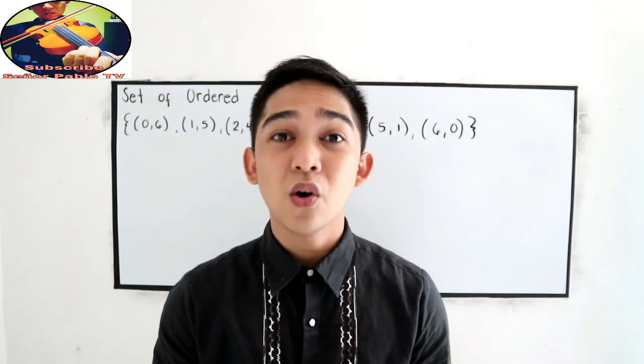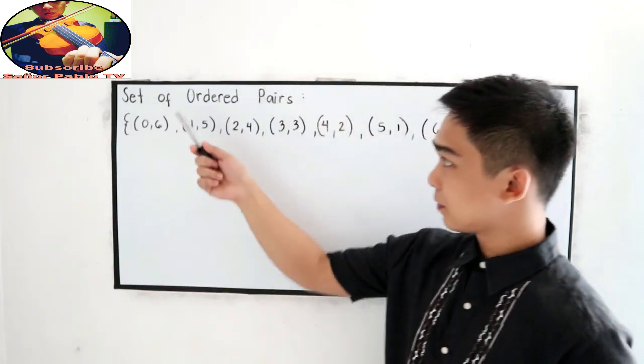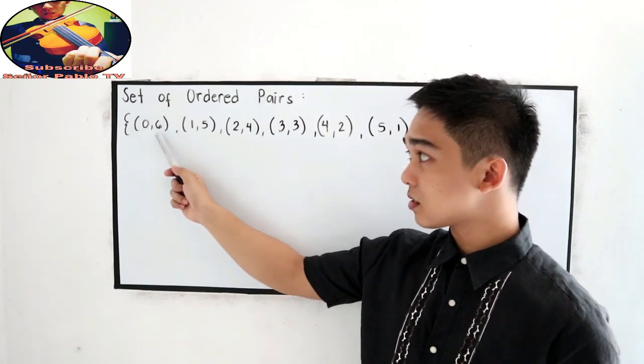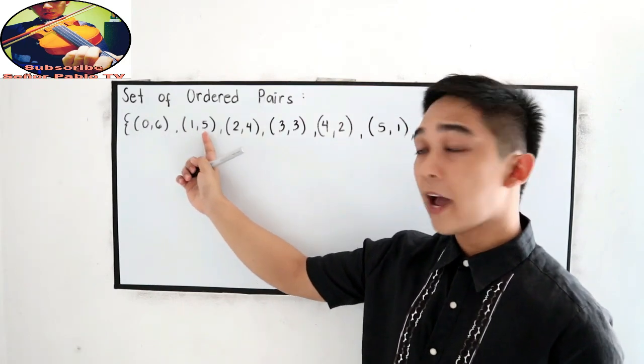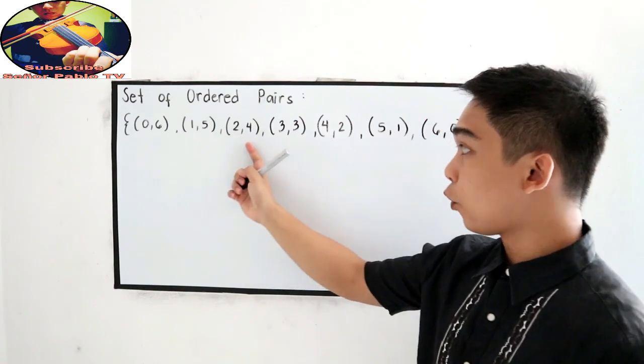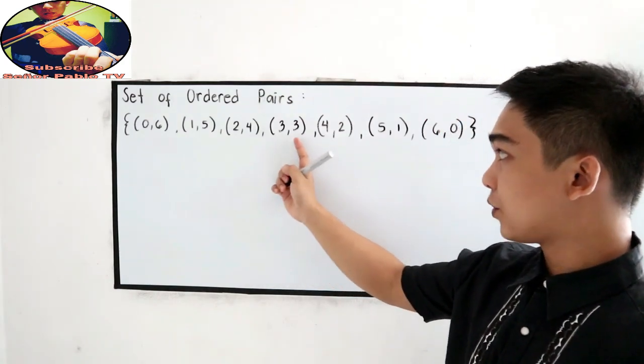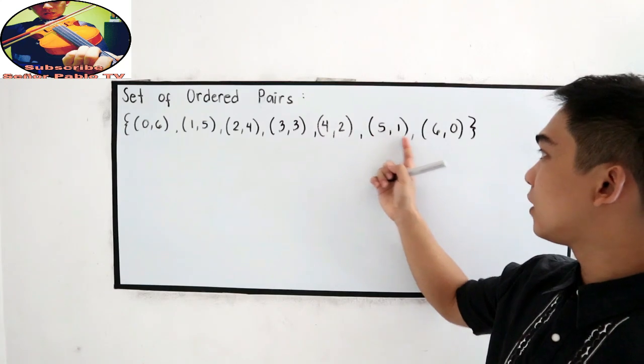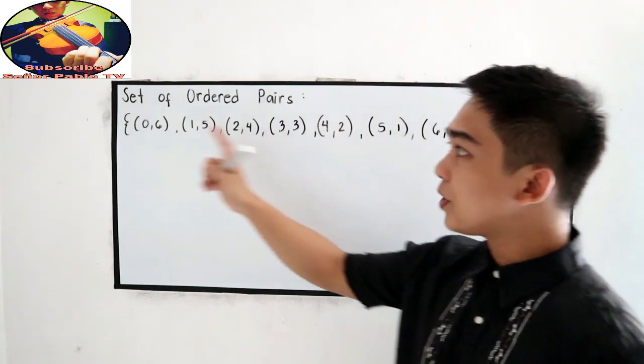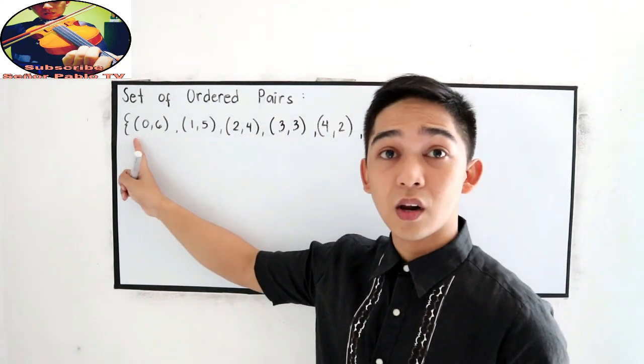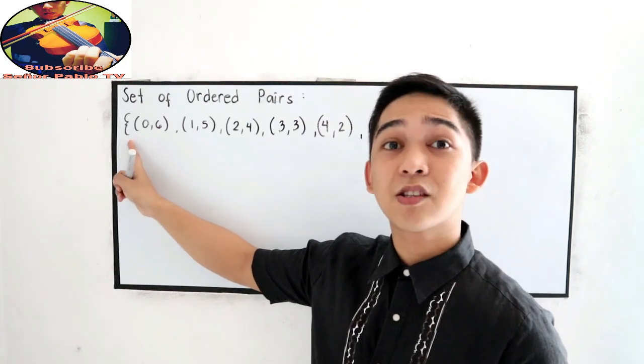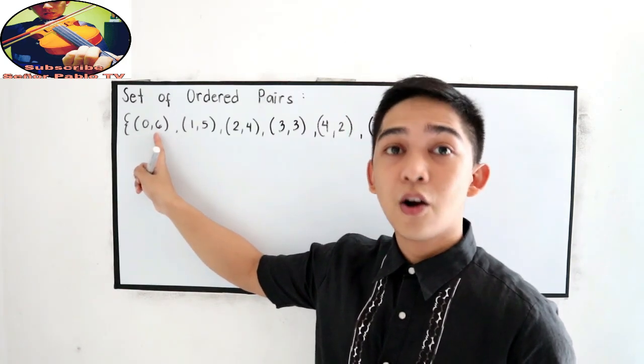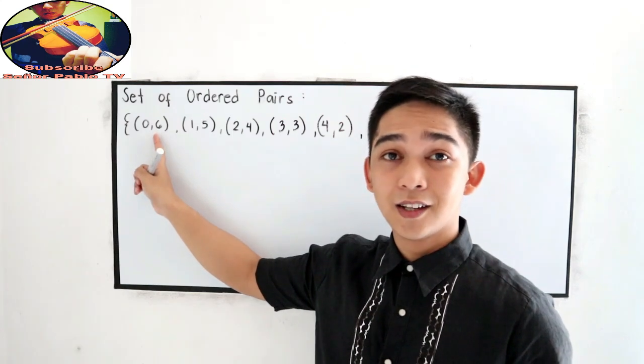Let's say we have the following ordered pairs: (0,6), (1,5), (2,4), (3,3), (4,2), (5,1), (6,0). We know that the first point is also called the abscissa or the x-coordinate, and the second is the y-coordinate or ordinate.